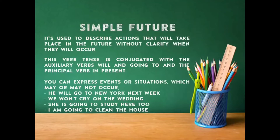Simple future. It's used to describe actions that will take place in the future without clarifying when they will occur. This verb tense is conjugated with the auxiliary verbs will and going to, and the principal verb in present. You can express events or situations which may or may not occur. Tenemos entonces que el futuro simple es usado para describir acciones que tomarán lugar en el futuro sin aclarar cuándo ocurrirán. Este tiempo conjuga el verbo auxiliar con el will y el going to, y un verbo principal en presente.